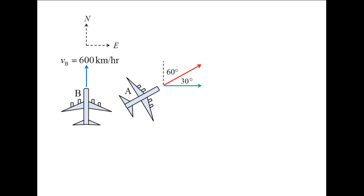What is the velocity of Jet A, named VA? And what is the velocity of Jet A relative to Jet B, named VAB?